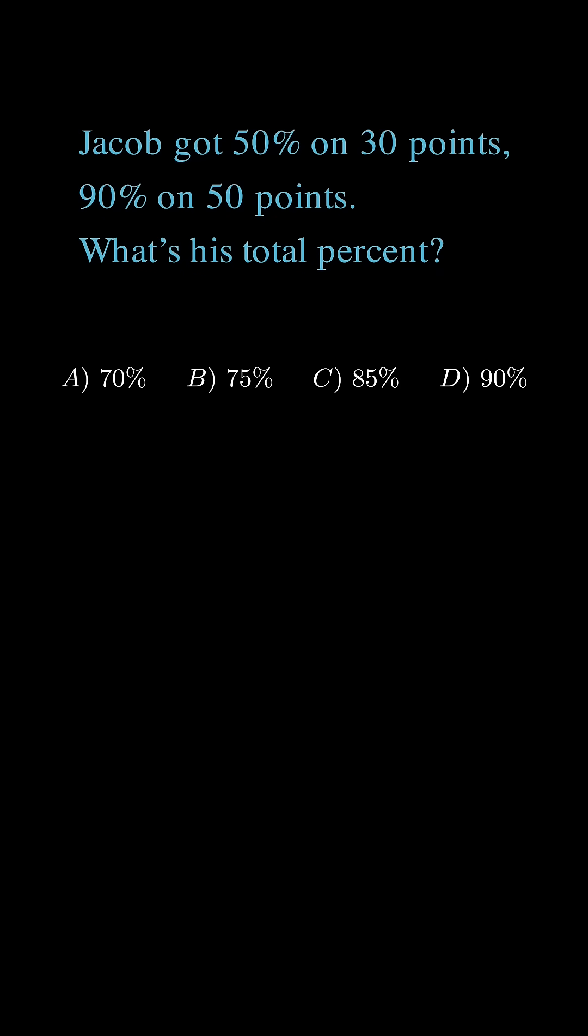Hmm. Maybe I can just average them. 50 plus 90 divided by 2. That's 70%. Easy.